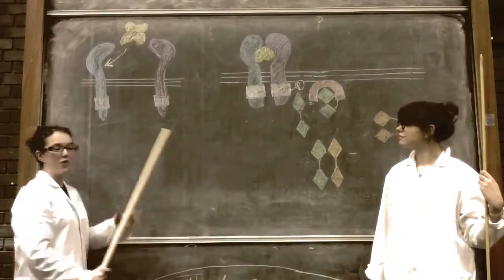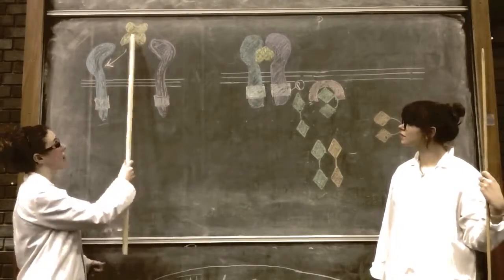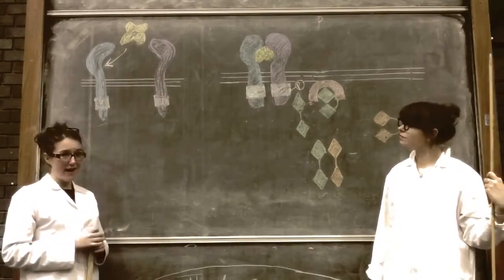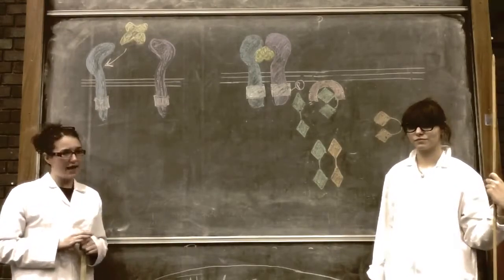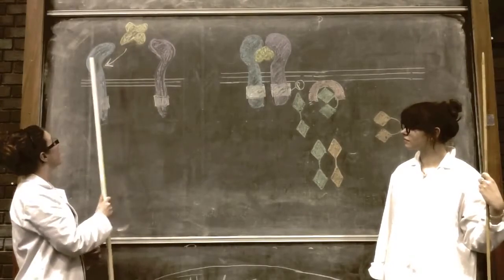We're going to go through the signaling pathway step by step. First of all, you start with a ligand. The two main ligands are TGF beta, for example activin, and BMP, which stands for bone morphogenetic protein.